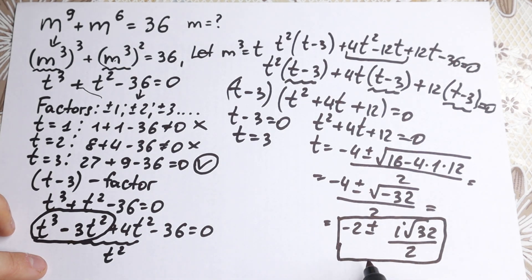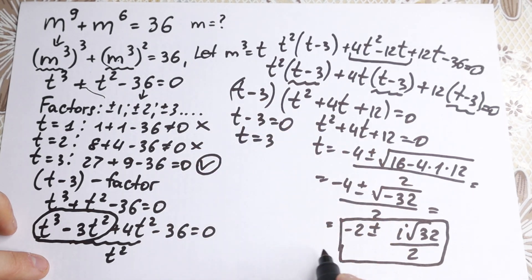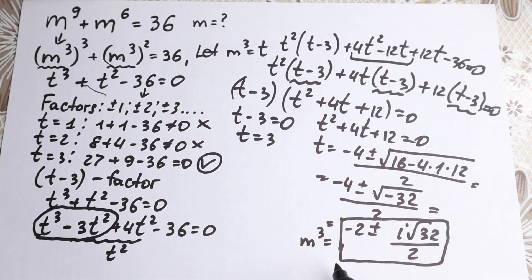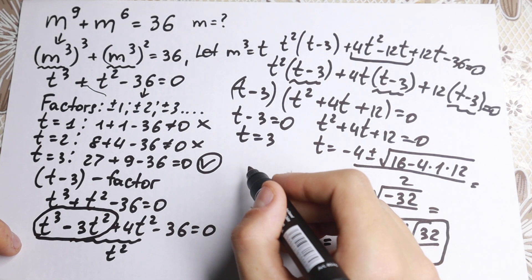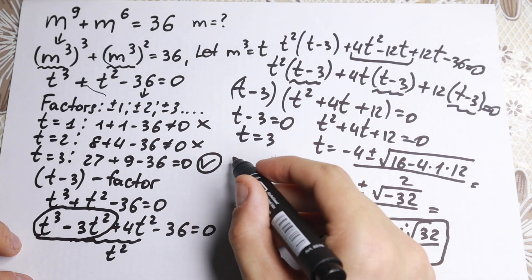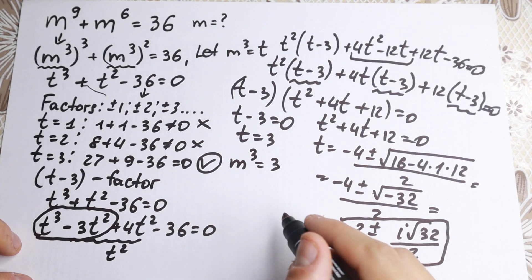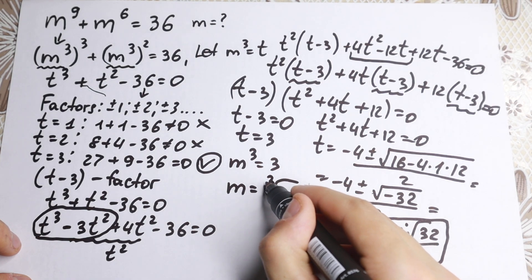These complex values of t would require further work to find all complex m values. But focusing on the real solution: t = 3, and since t = m³, we have m³ = 3. Taking the cube root of both sides, m = ∛3. This is our answer.